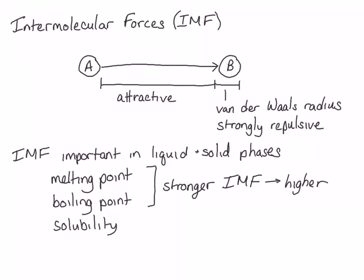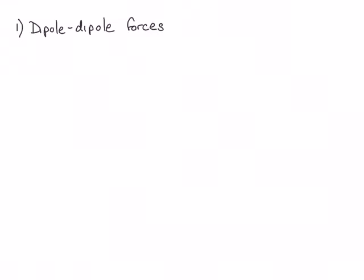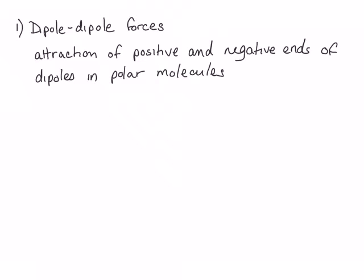Now let's take a closer look at the three kinds of attractive intermolecular forces. The first is called dipole-dipole forces. Dipole-dipole forces are attractive intermolecular forces resulting from the attraction of the positive and negative ends of dipoles in polar molecules. Polar molecules have a molecular dipole with a positive end and a negative end, and dipole-dipole forces result from the positive of one dipole attracting the negative of another.